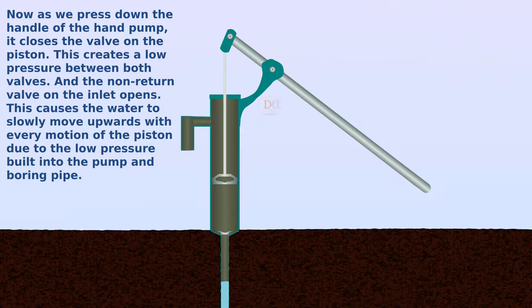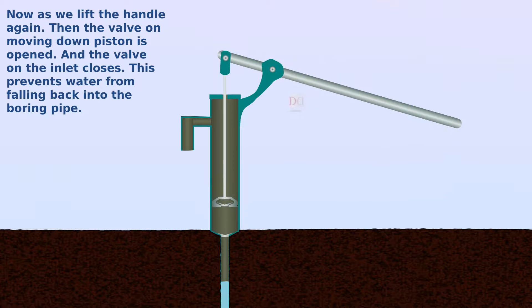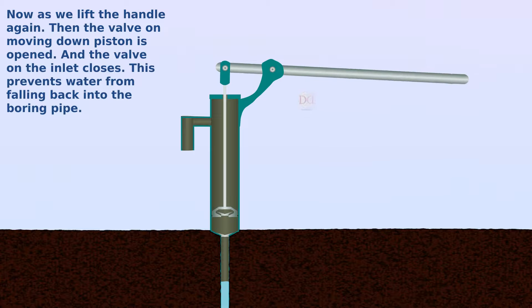Now as we lift the handle again, the valve on the moving down piston is opened and the valve on the inlet closes. This prevents water from falling back into the boring pipe.